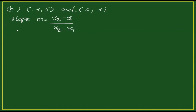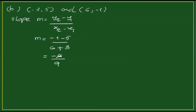For the next pair, the equation uses x1, y1 and x2, y2. So m equals minus 1 minus 5 over 6 minus minus 3, giving minus 6 over 9, which simplifies to minus 2 by 3. The slope of this line is minus 2 by 3.